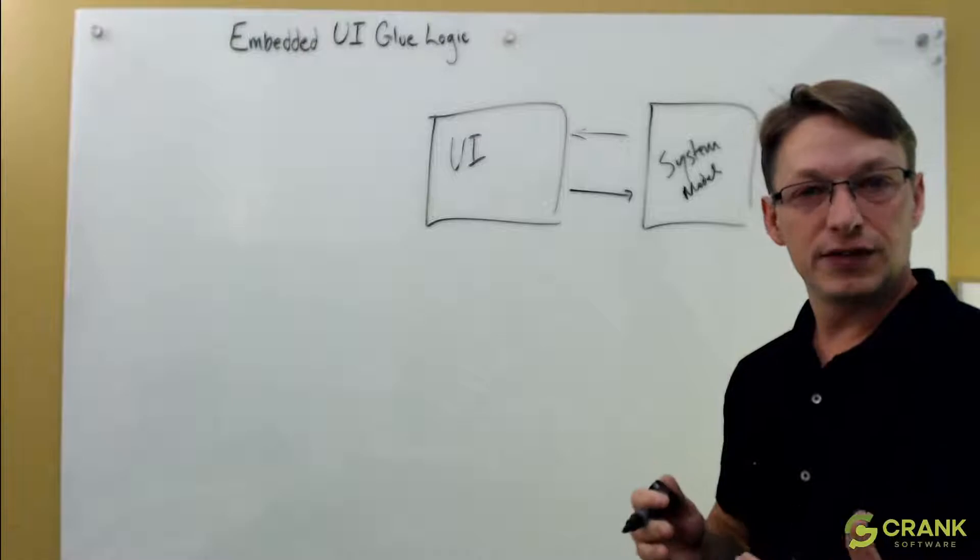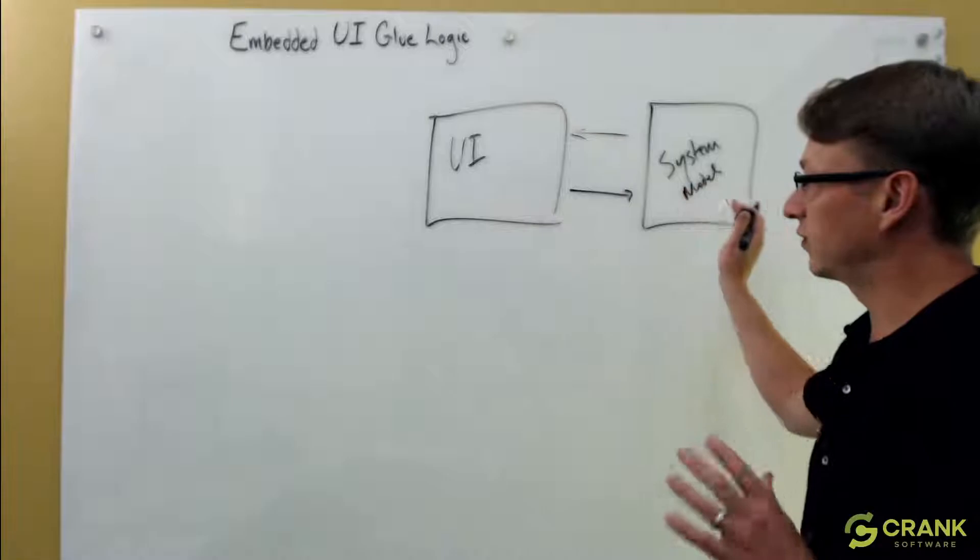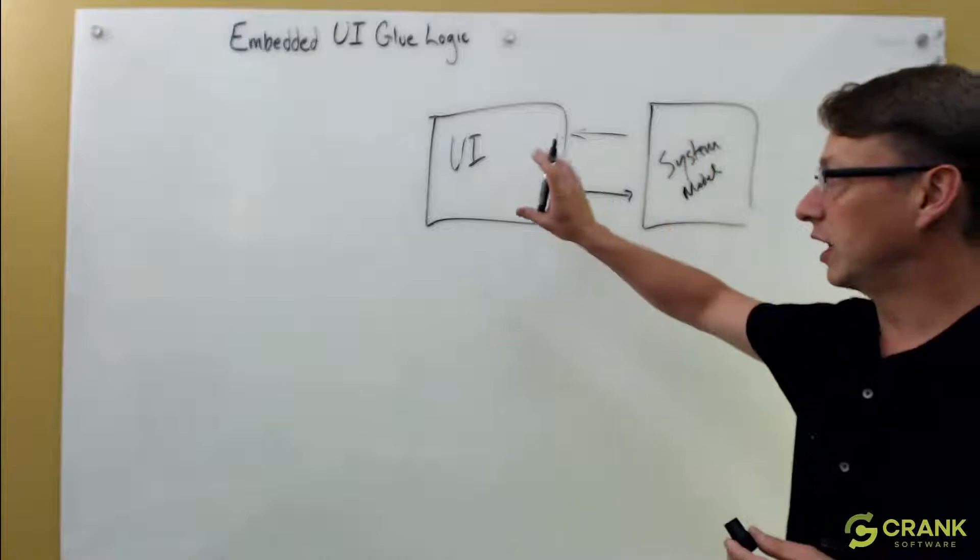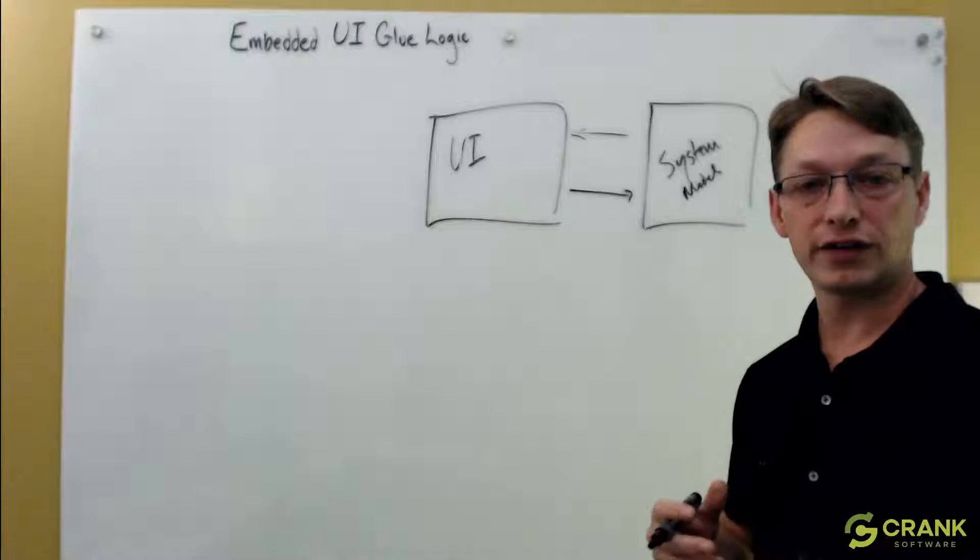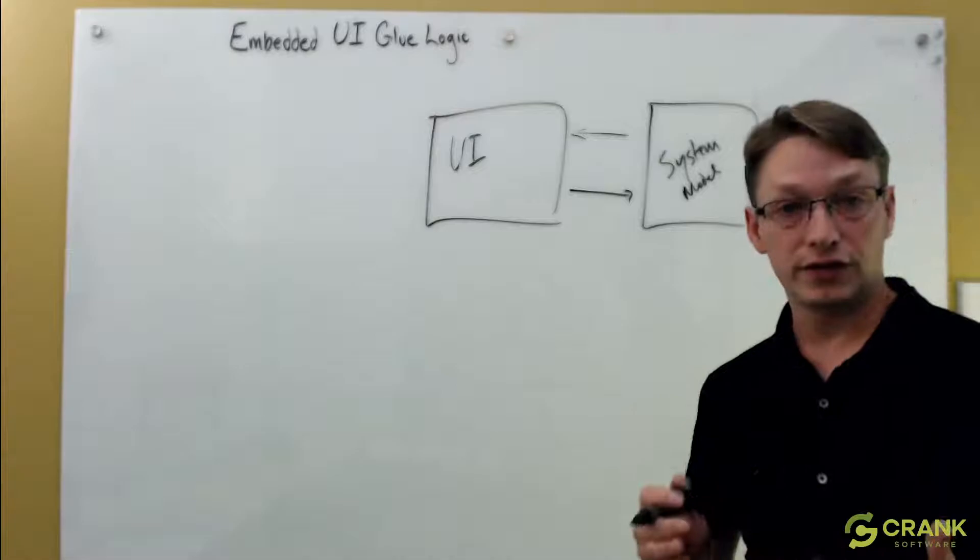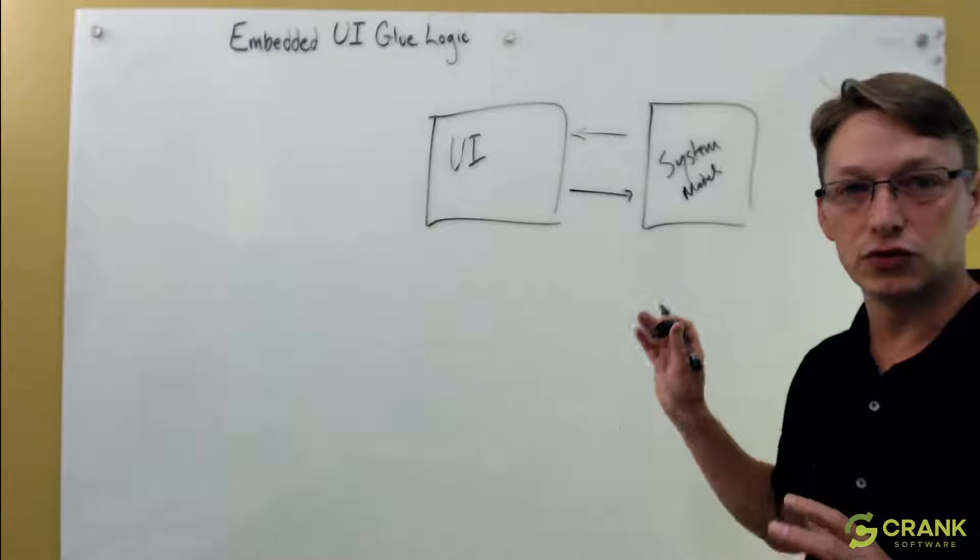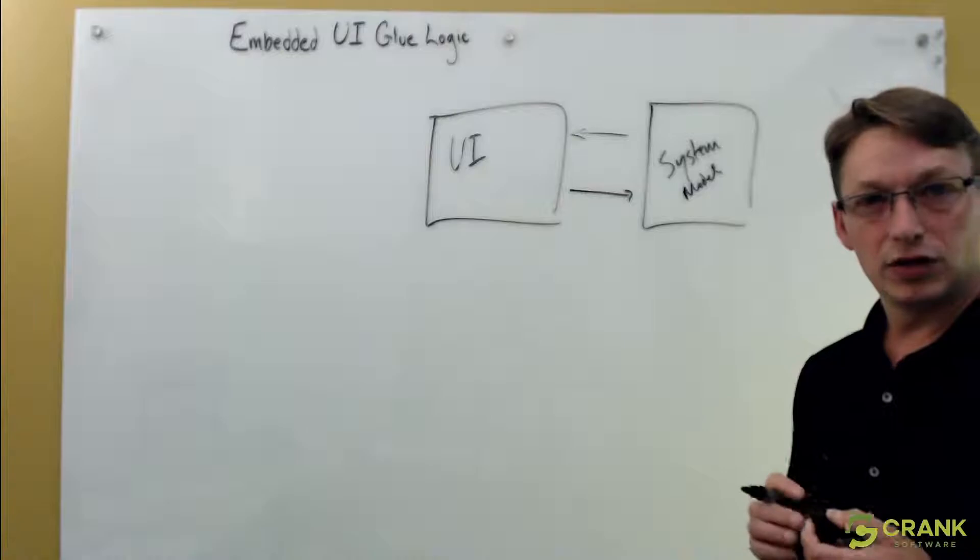There's generally a communication pattern followed to move data back and forth between the system. We'll call this the model - the system model and the UI model in the presentation. MVC, MVP, MVVM are all different ways to achieve this separation. Ultimately, they're concerned with keeping the system model intact and allowing the UI to change its presentation, to change the way it reflects those data values to your system.